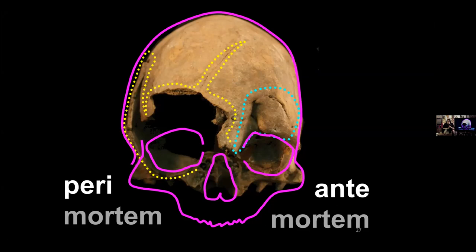Sometimes we also see rib fractures. These can be the results of accidents — people can fall, or today people have car accidents — but they can also be indicative of violence. People who suffer beatings, people who suffer chronic abuse: when we're looking for signs of chronic abuse, we're looking not just for one rib fracture, but for fractures on different ribs at different stages of healing, suggesting those injuries were received periodically over time. That is clinically indicative of chronic and violent abuse.